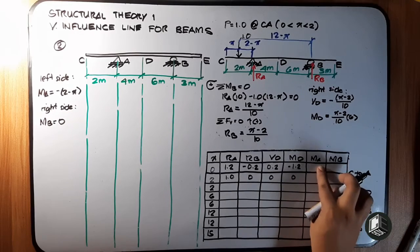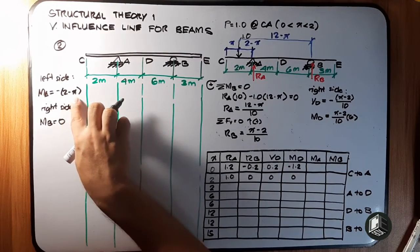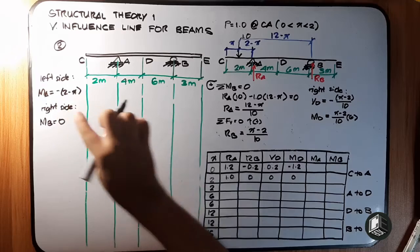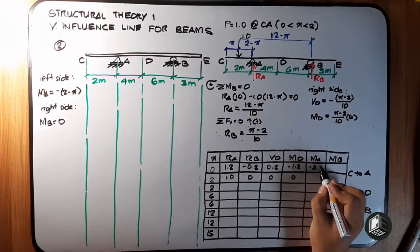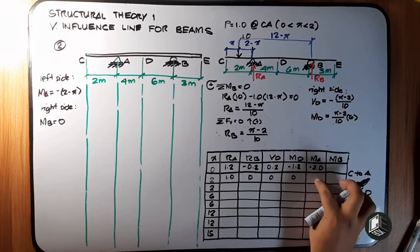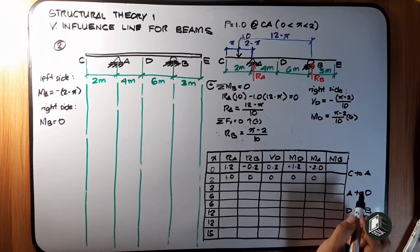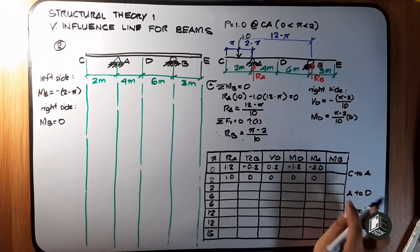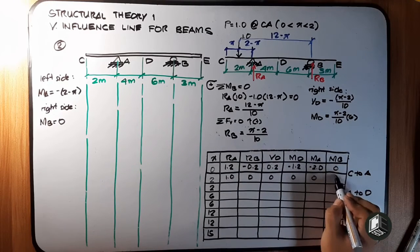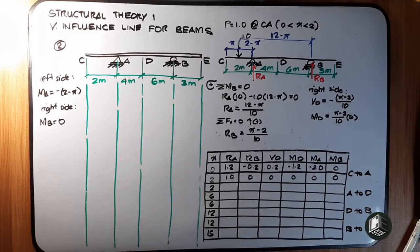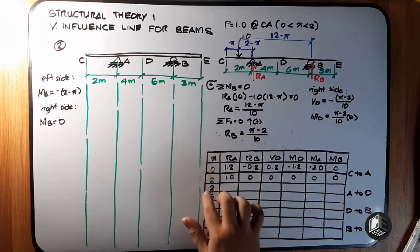At X=2 meters, moment at D: (2 minus 2) = 0. Moment at A: substituting X=0 into negative (2 minus X) gives negative 2.0. At X=2 meters: negative (2 minus 2) = 0. Moment at B: 0. So we have obtained all ordinates from C to A for the distance of 0 meters to 2 meters.